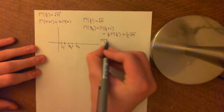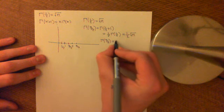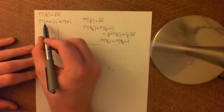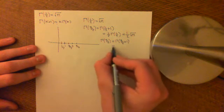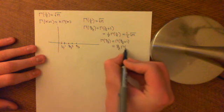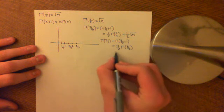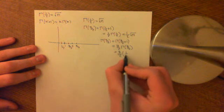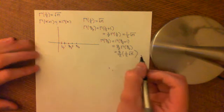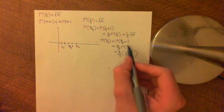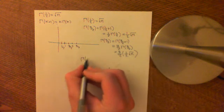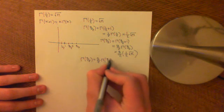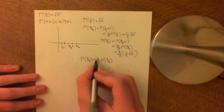Next, gamma of 5 over 2 equals gamma of 3 over 2 plus 1, so with k equal to 3 over 2, we get 3 over 2 times gamma of 3 over 2, which equals 3 over 2 times a half times the square root of pi. Each time you go up by 1, you multiply by the next half-integer. For gamma of 7 over 2, you would get 5 over 2 times gamma of 5 over 2, and so on.